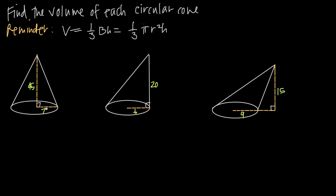When we have that particular object, we can find the volume using this formula. Volume is equal to one-third times B times h, where capital B is the area of the base, and h is the height of the cone — not the slant height, but the length of the altitude, the interior height of the cone.